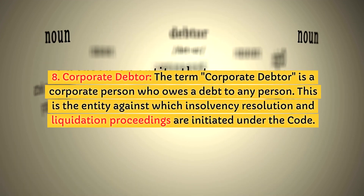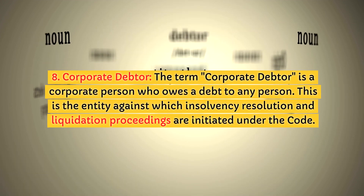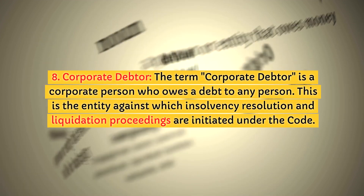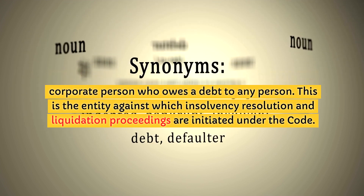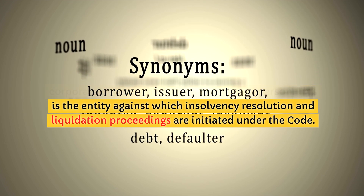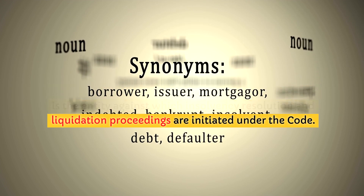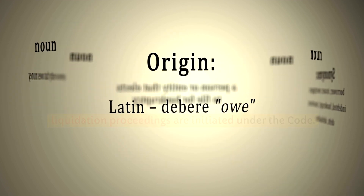8. Corporate Debtor. The term 'Corporate Debtor' is a corporate person who owes a debt to any person. This is the entity against which insolvency resolution and liquidation proceedings are initiated under the code.